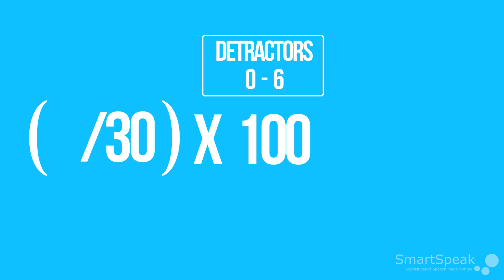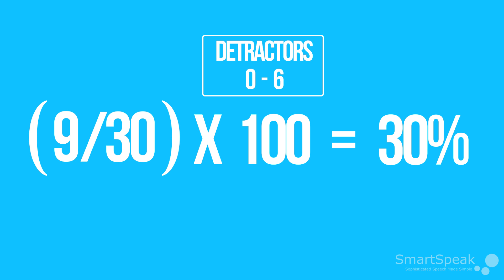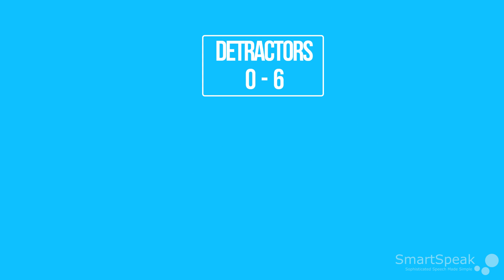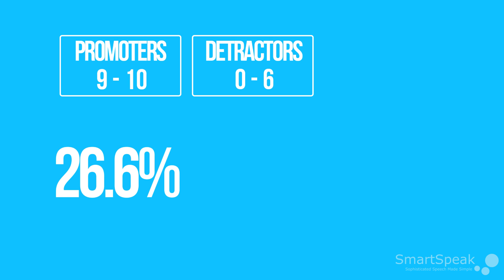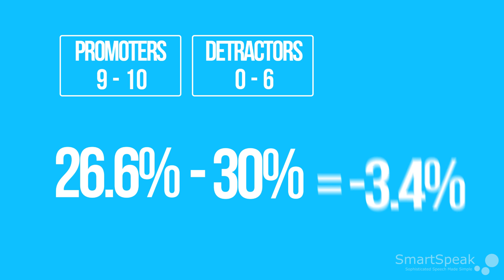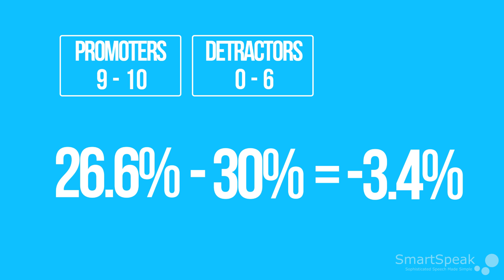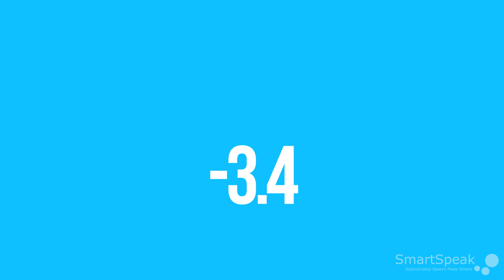And now the detractors: 9 divided by 30 times 100 equals 30%. To calculate your NPS score, simply subtract the percentage of detractors from the percentage of promoters. 26.6% minus 30% equals negative 3.4. That's it — your NPS score is negative 3.4.